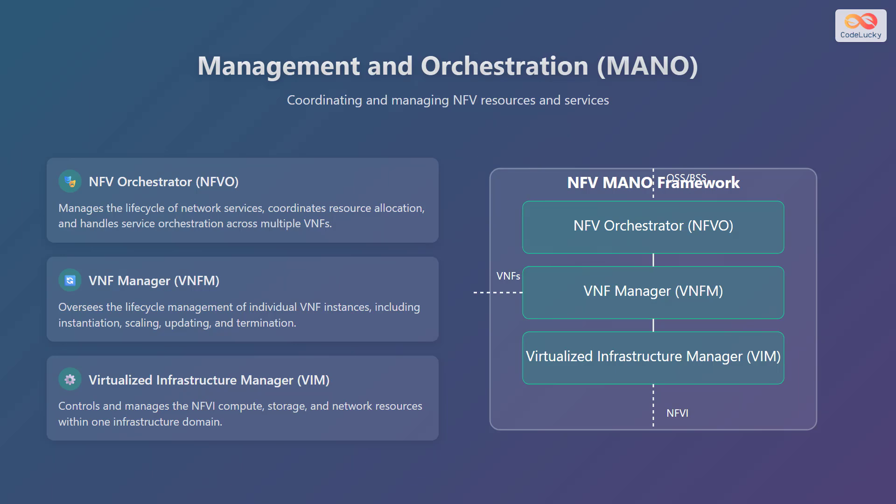Management and orchestration, or MANO, is crucial for coordinating and managing NFV resources and services. The first key component is the NFV orchestrator, or NFVO, which manages the lifecycle of network services, coordinates resource allocation, and handles service orchestration across multiple VNFs. The second key component is the VNF manager, or VNFM, which oversees the lifecycle management of individual VNF instances, including instantiation, scaling, updating, and termination. The third key component is the virtualized infrastructure manager, or VIM, which controls and manages the NFVI compute, storage, and network resources within one infrastructure domain.